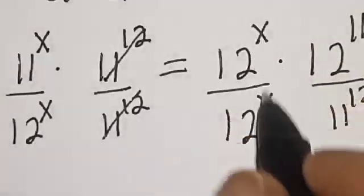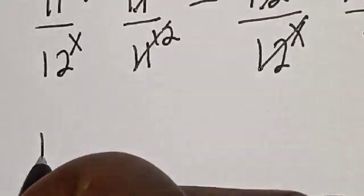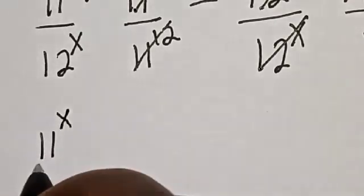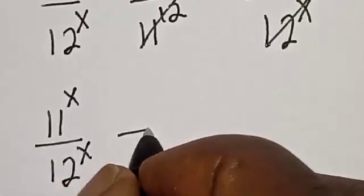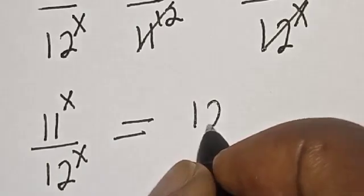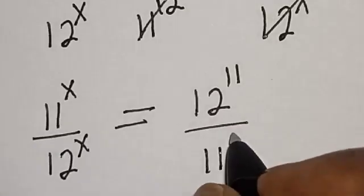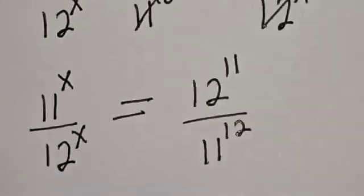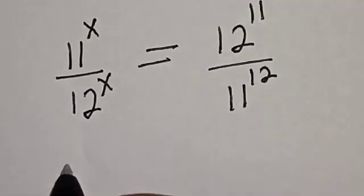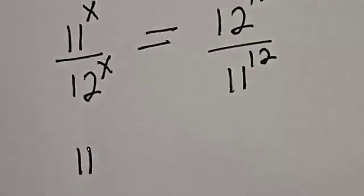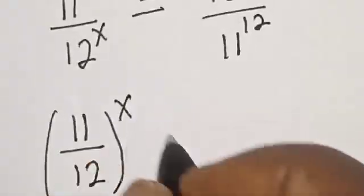We cancel 12 raised to power s, and we are left with 11 raised to power s over 12 raised to power s. These have the same power of s, so this can be written as 11 divided by 12, all raised to power s.